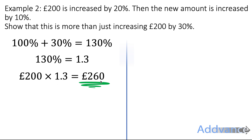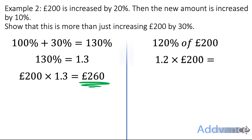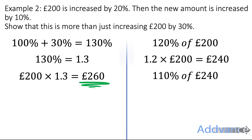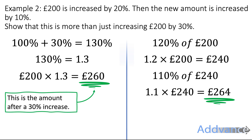So if you increase £200 by 30% you get £260. Now let's do it the other way: increase £200 by 20% first. That is 120% of £200, which is 1.2 × £200 = £240. Now we increase that amount by 10%, so we find 110% of £240. That's 1.1 × 240, which gives £264.